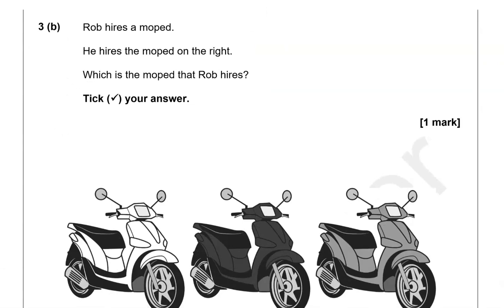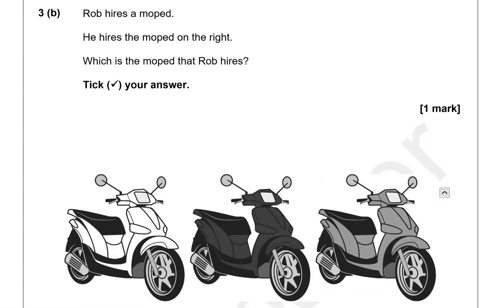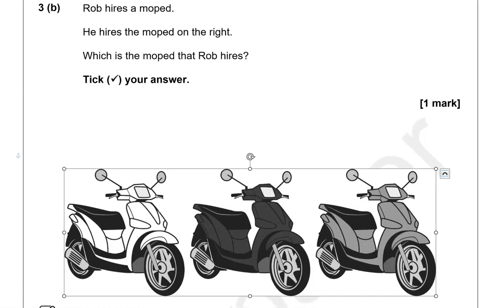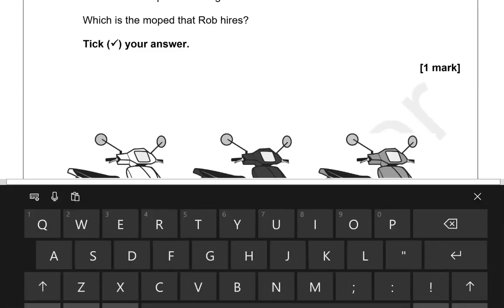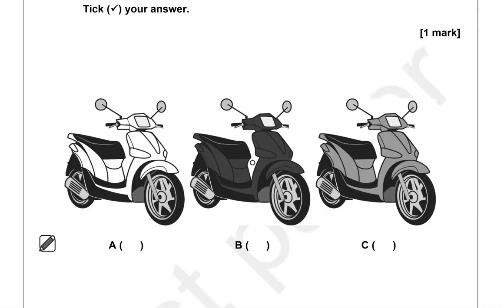Rob hires a moped — he hires the moped on the right. Which is the moped that Rob hires? Tick your answer. This one is in the middle and this one is on the right, so option C is the correct one.